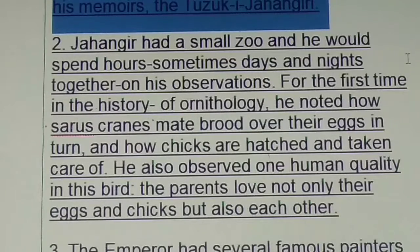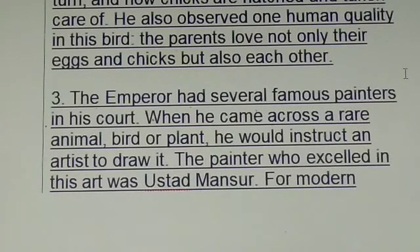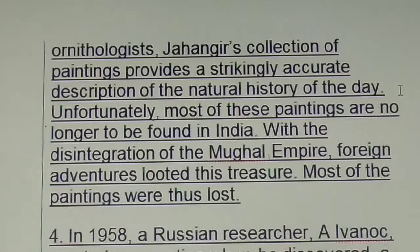The care and accuracy with which Jahangir described various characteristics of animals and birds, their geographical distribution and behaviour, would have done credit to a full-time naturalist. His observations are recorded in his memoirs, the Tuzuk-e-Jahangiri. Jahangir had a small zoo and he would spend hours — sometimes days and nights together — on his observations. For the first time in the history of ornithology, he noted how sarus cranes mate, brood over their eggs in turn, and how chicks are hatched and taken care of. He also observed one human quality in this bird: the parents' love not only for their eggs and chicks but also for each other. The emperor had several famous painters in his court; when he came across a rare animal or plant, he would instruct an artist to draw it.